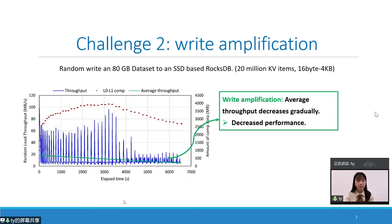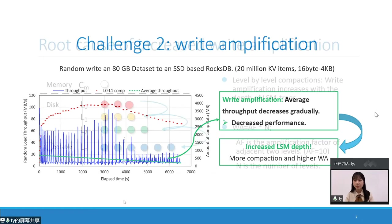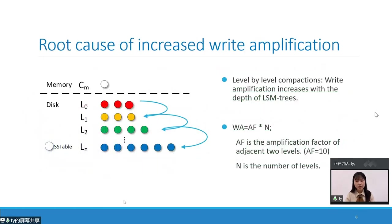From the same test, we observe the second challenge. As the green line shows, system throughput degrades with the increase of dataset size. The growing dataset increases the depth of an LSM tree, bringing more compaction and thus higher write amplification. LSM tree-based KV stores have long been criticized for their high write amplification due to level-by-level compactions. With the amplification factor of adjacent levels at 10 by default, write amplification equals AF times N, where N is the number of levels.